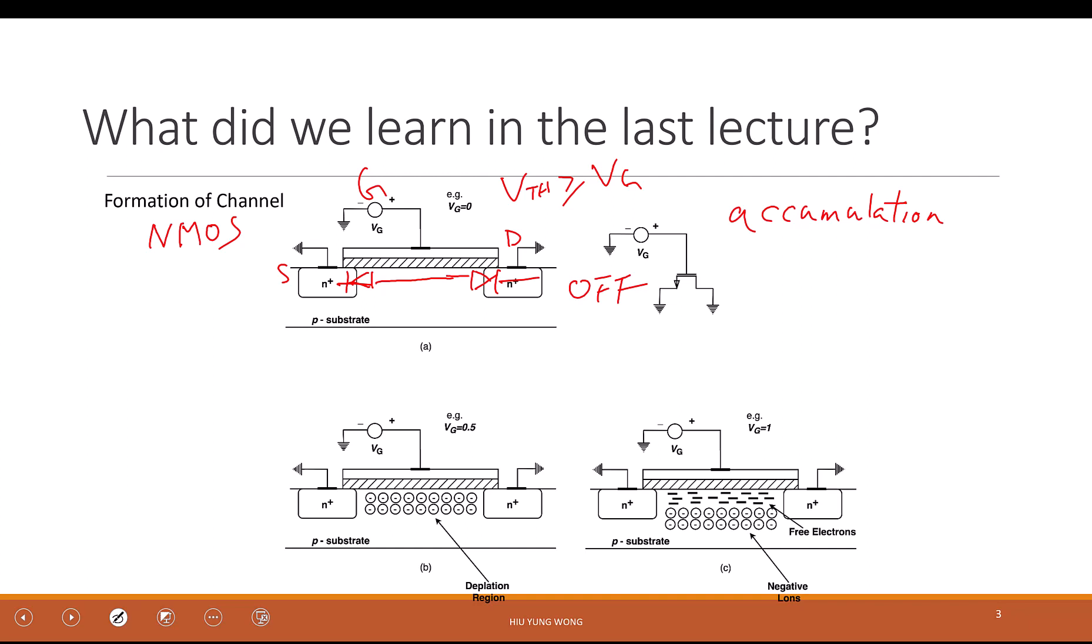At this stage, still, it is smaller than the threshold voltage. But we start having a more positive potential. As a result, we repel all the holes away. Because you have more positive bias, you start repelling the holes.